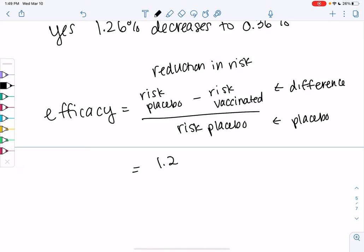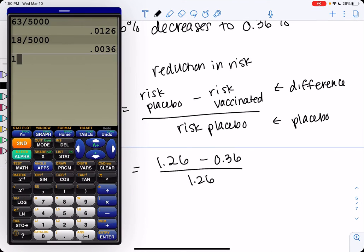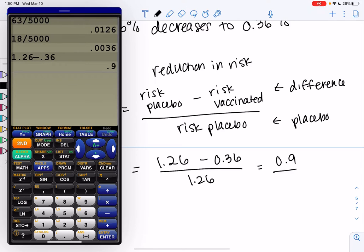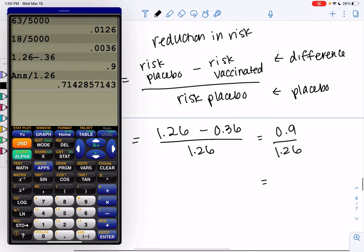And so we get that 1.26 was our risk with the placebo minus the 0.36 was our risk vaccinated, and then just divide by 1.26. So we'll do 1.26 minus 0.36. That's telling us the difference, which is 0.9. And then divide by 1.26. And so the efficacy is 71.4%. Again, I said the numbers were rounded, so they were actually saying it was 72%. And so that's probably just because they had rounded these numbers a little bit. But that's how they calculate efficacy.